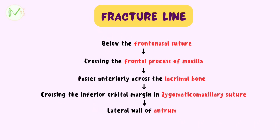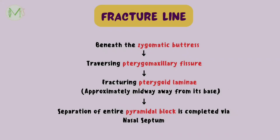The fracture line now extends downward, forward, and laterally to traverse the lateral wall of the antrum. The fracture line then travels beneath the zygomatic buttress, traversing the pterygomaxillary fissure, thereby fracturing the pterygoid laminae approximately midway from its base. This causes the separation of the entire pyramidal block, completed via the nasal septum.